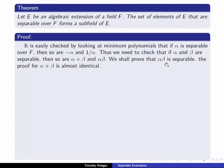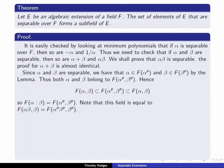We'll prove that alpha*beta is separable; the proof for alpha plus beta is almost identical. Since alpha and beta are separable, by the lemma just proved, alpha is in F(alpha^p) and beta is in F(beta^p). So both alpha and beta belong to F(alpha^p, beta^p). We conclude that F(alpha, beta) and F(alpha^p, beta^p) are the same field.